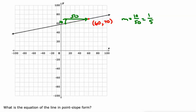So what's our equation then? y minus the 70 equals slope one fifth times x minus the 60. And that's our equation in point slope form.